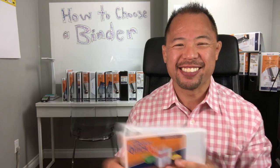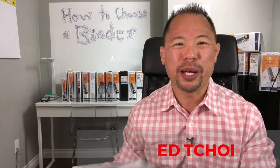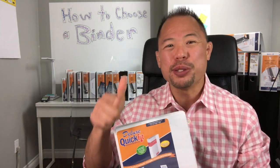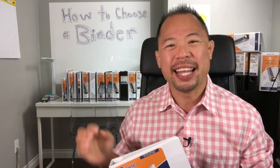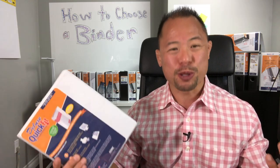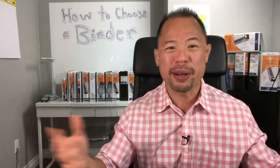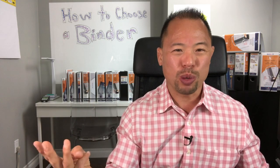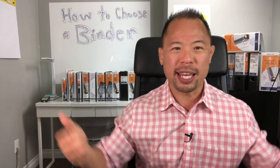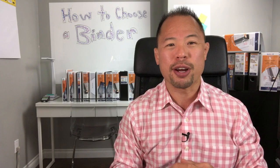Today we're talking about binders. Hey guys, thanks for joining me today, my name is Ed Choi. Today we're going to be going over how to choose a proper binder. Now if you're new to this channel please consider subscribing. In this channel I talk about everything to do with the office including office products, tips and tricks, and in today's episode we're going to be talking about how to choose a binder. For the longest time I thought a binder was a binder — it's got three rings, it opens and closes, and I can put my documents in. But that's not the case, as you can see behind me we have tons and tons of different options for binders. So today let's figure it out.